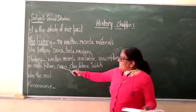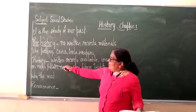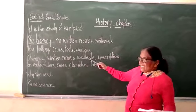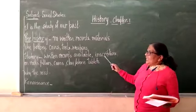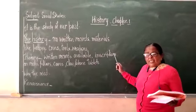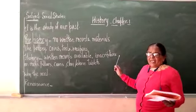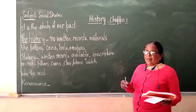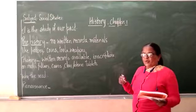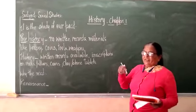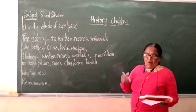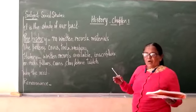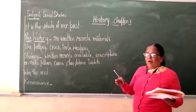Next, coming to history — history is that period of time for which written records are available. And these written records are mostly inscriptions. Inscriptions, children, means writing not with a pen or pencil, but with sharp-edged tools. They were engraved, dug on rocks and clay tablets. Clay tablets means blocks of soil or rock.